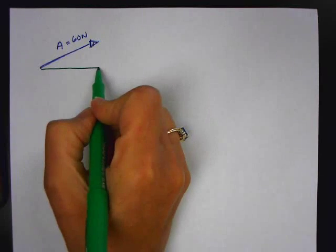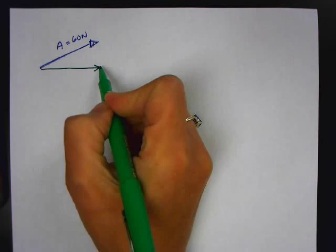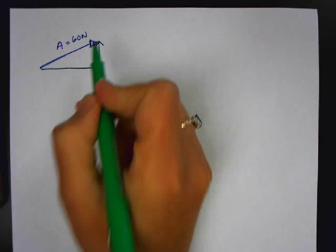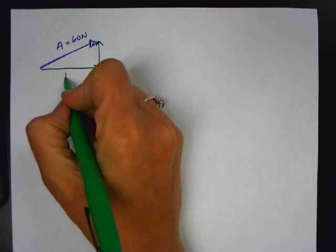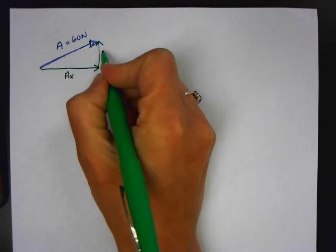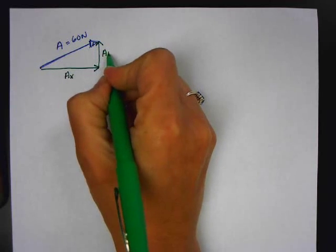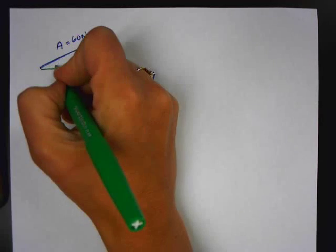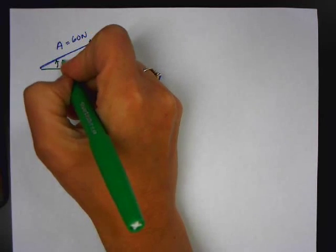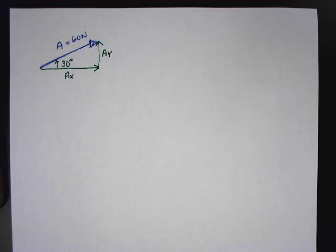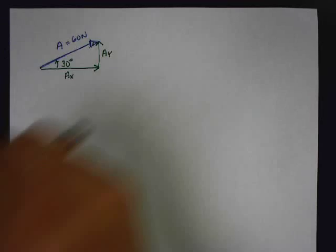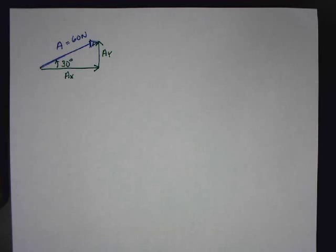The magnitude of vector A is 60 newtons, and the angle is 30 degrees. Remember, components of vectors are always added head to tail. One component always goes horizontal, and from the head of that one, the tail of the other one goes vertical. So this is A subscript x and this is A subscript y, and the angle given is 30 degrees. This is a right triangle, so I can use the definition of sine, cosine, and tangent.